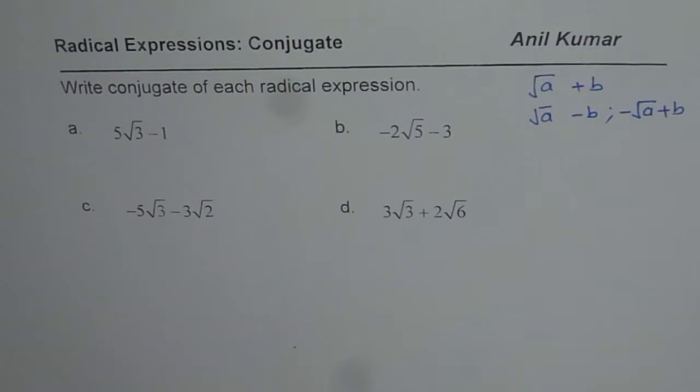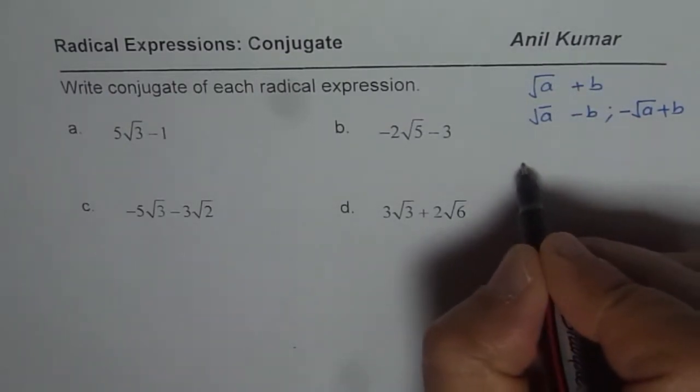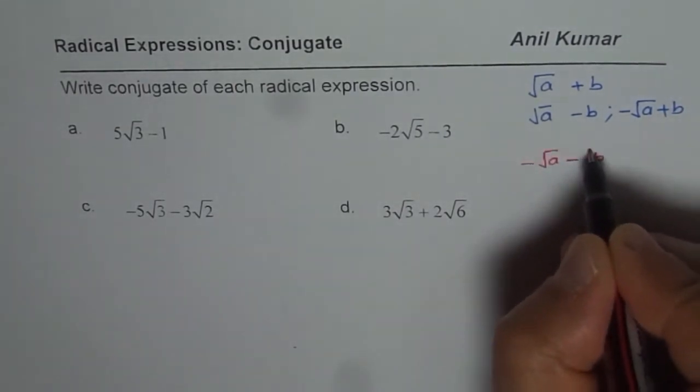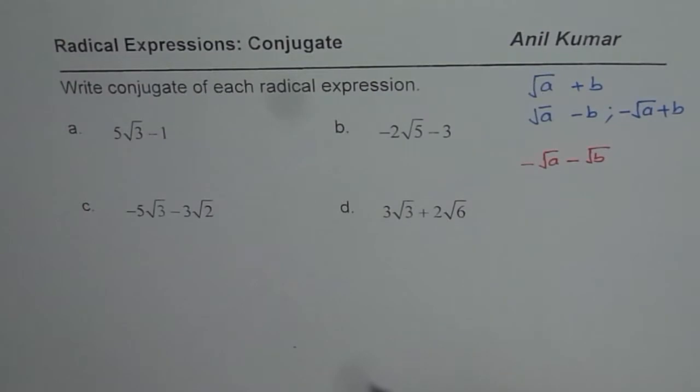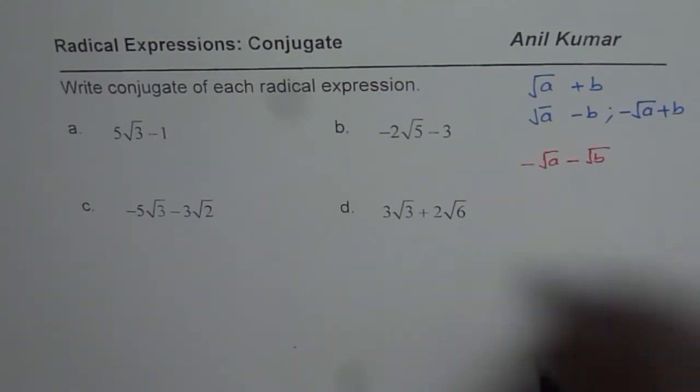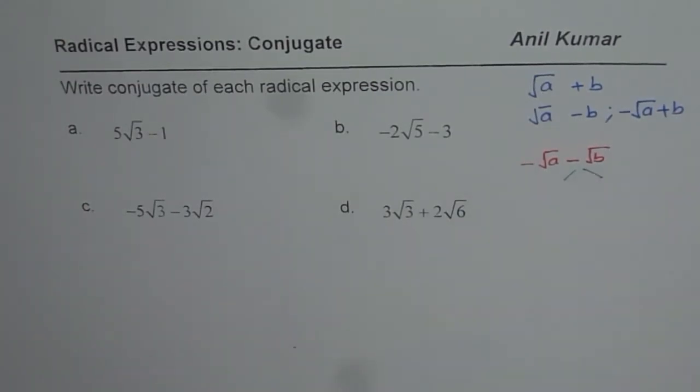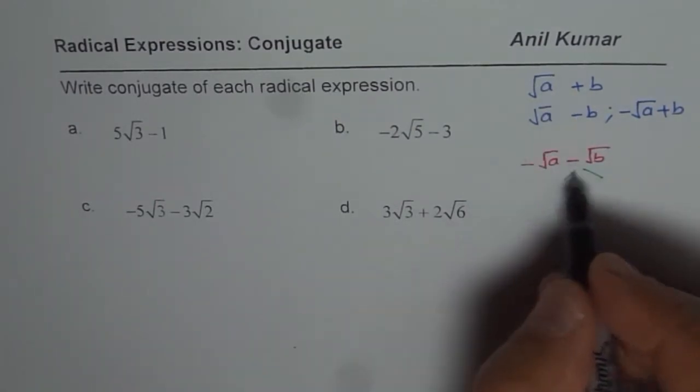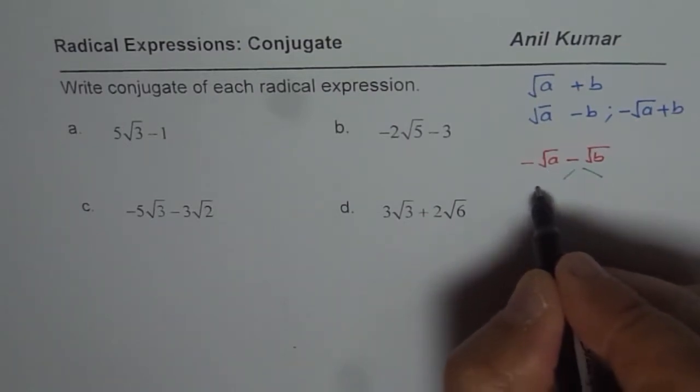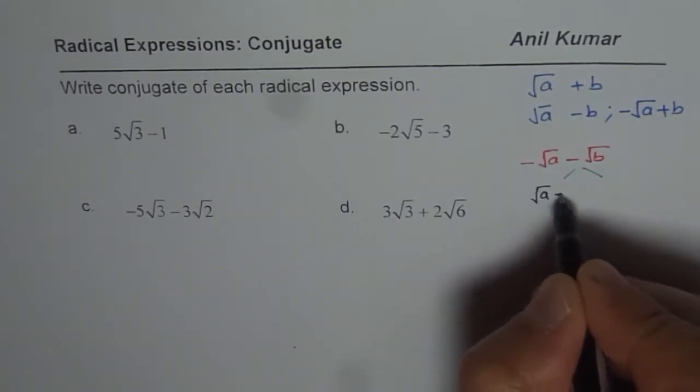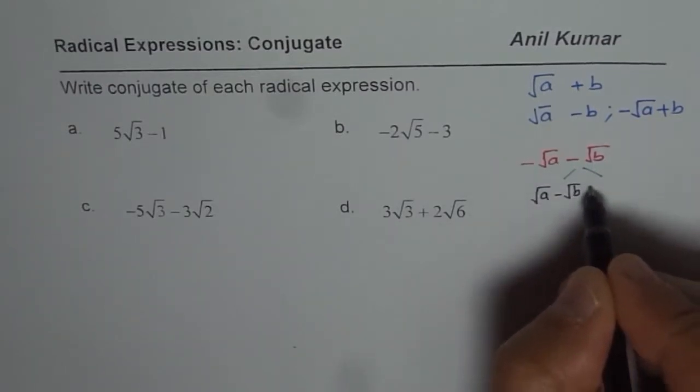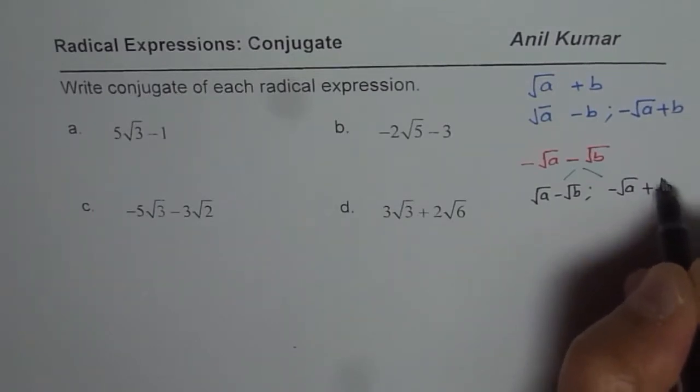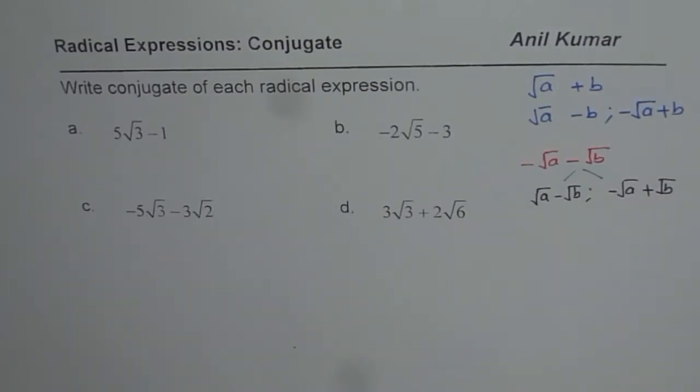Now sometimes students get confused if I give an expression as √a - √b. In that case what will be the conjugate? Well here also we have two combinations. You could write this as you have to change just one of them, one of the signs to make it conjugate. So you could prefer to change the sign for a or you could maintain this as negative but change the sign for √b. Both will be the conjugate.